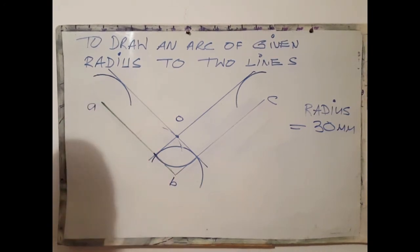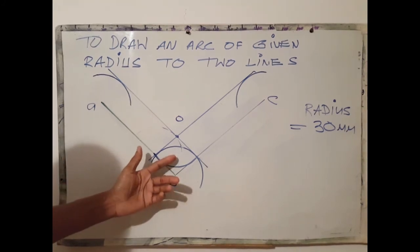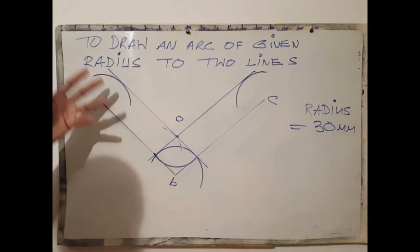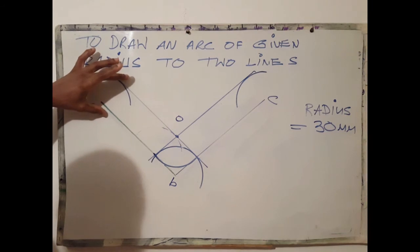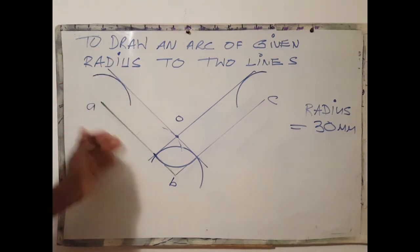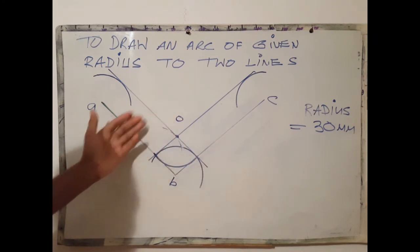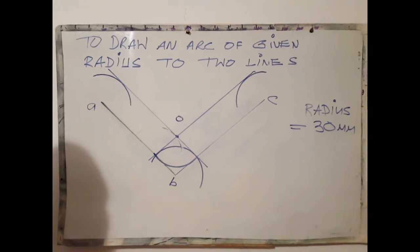Let us recap. First step is to open your compass to determine the size of the radius. In this case use 30 mm. Use whatever radius you want here. Draw a parallel line equivalent to that distance to both lines. At the point where both parallel lines meet, use that point as center to describe your arc. So, that's all.